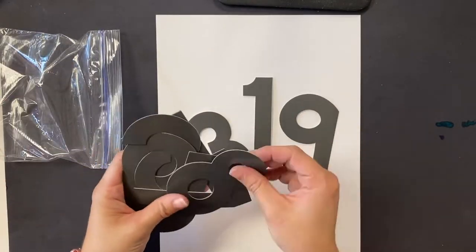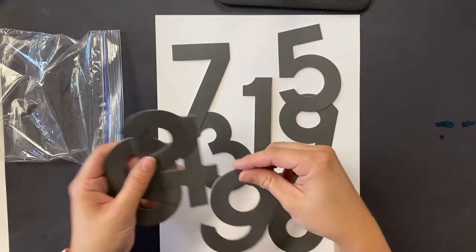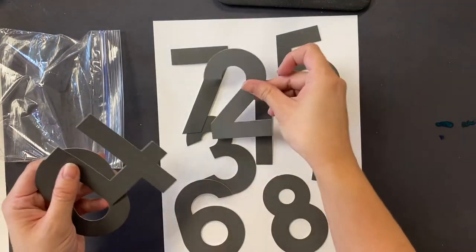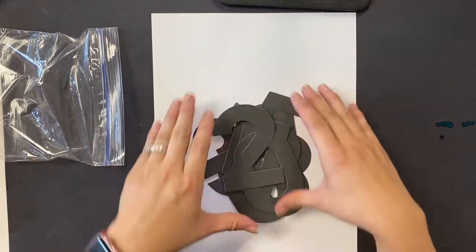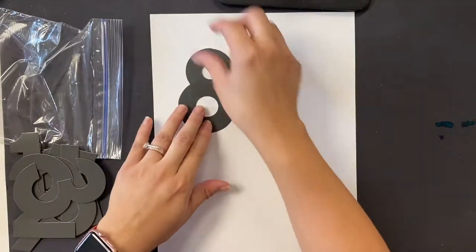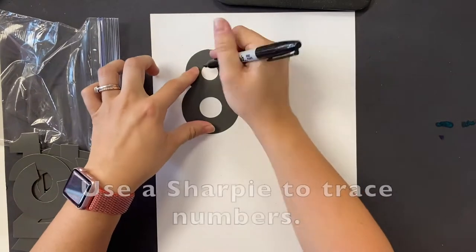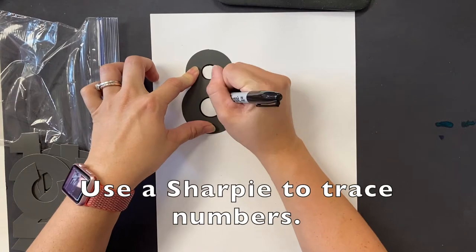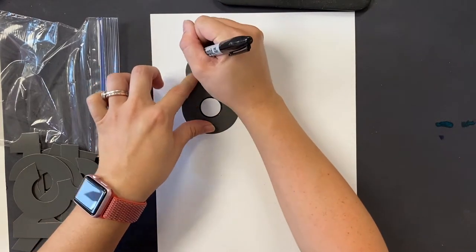You're going to have stencils of each of the numbers 0 through 9. You can use all of the numbers or you can use just certain numbers if you want. We're going to use Sharpies to trace the numbers anywhere on the paper that you want.